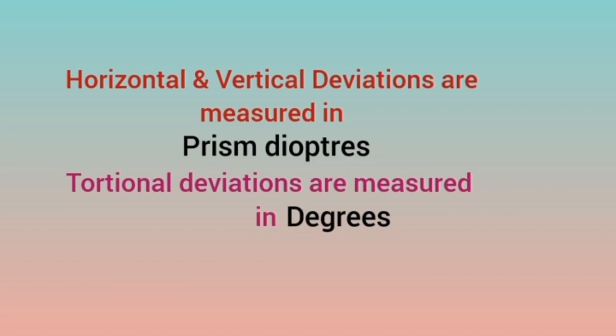An important point to memorize: horizontal and vertical deviations are always measured in prism diopters, while torsional deviations are measured in degrees. For example, if eight is aligned with the white arrow — an even number — the patient has 8 prism diopter exophoria. And if there is a torsional deviation of three lines below zero, that is 3 degrees of excyclophoria. This is how you use Maddox Wing to measure near phorias.